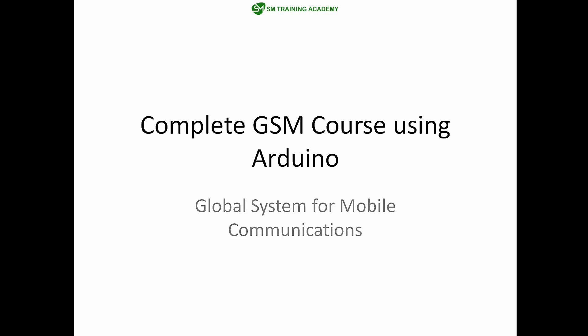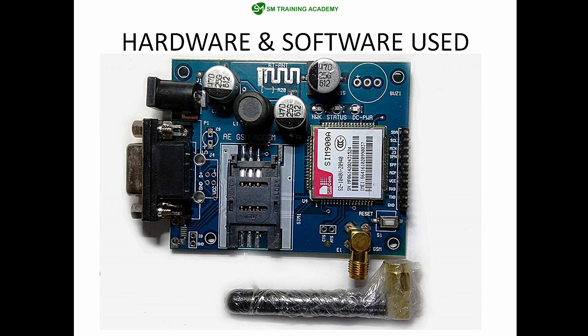Starting with the hardware components, the first hardware component we are going to use is the GSM module. The GSM module I am going to utilize in this course is the SIM900A module. This GSM module uses several communication protocols such as I2C, UART, and SPI, and we are going to utilize the UART communication supported by this SIM900A module for sending AT commands and for fetching the data retrieved back from this GSM module.